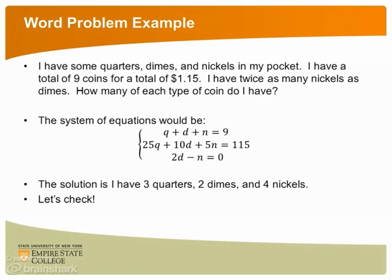The next equation would be 25 times q plus 10 times d plus 5 times n equals 115. This is because each quarter is worth 25 cents. So 25 times q is the amount of money we have in quarters. Each dime is worth 10 cents, and nickels are worth 5 cents. The last equation is a little trickier. Since we have twice as many nickels as dimes, if we subtract 2 times d, the number of dimes, minus n, the number of nickels, we get 0.